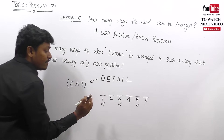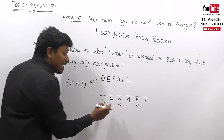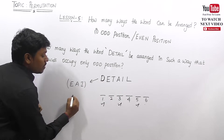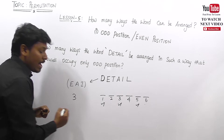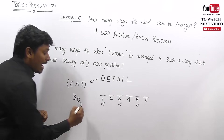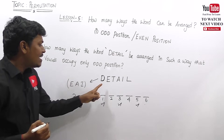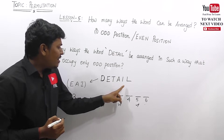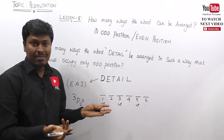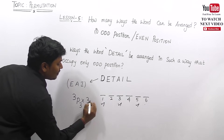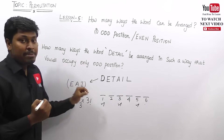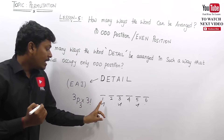There are three odd positions, and we need to place these three vowels — E, A, I — in those three positions. So that is 3P3. The remaining consonants D, T, L can be placed in the even positions two, four, six in any arrangement, which is three factorial ways.